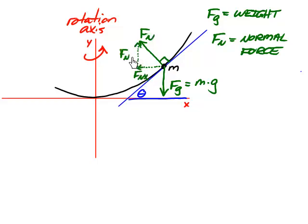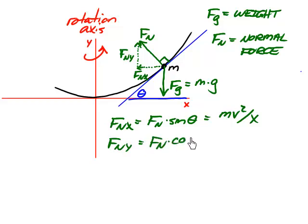The inwards force, F sub nx, which is F sub n sine theta, is the centripetal force that makes M go in a horizontal circle. Therefore, it must equal mv squared over r. The upwards force, F sub ny, must be holding the mass m up against gravity. So F sub n cosine theta must equal mg.